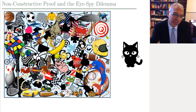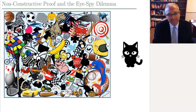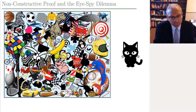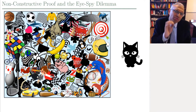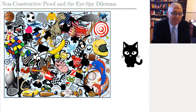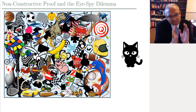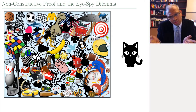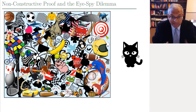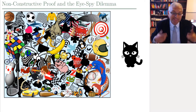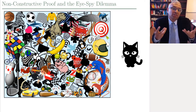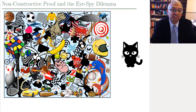Non-constructive proof. So what's the idea? The idea behind a non-constructive proof is: can you convince someone, can you prove to someone that something exists without showing them how to find it, without showing them where it actually is? That's an example of a non-constructive proof of existence.